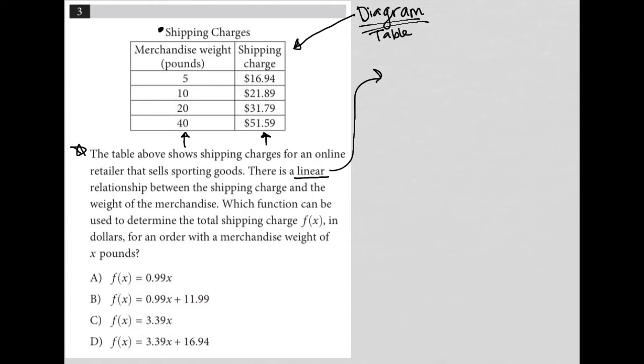I'm immediately going to think Y equals MX plus B, of course, where M is the slope and B is the Y intercept.